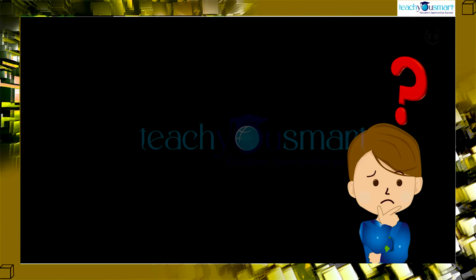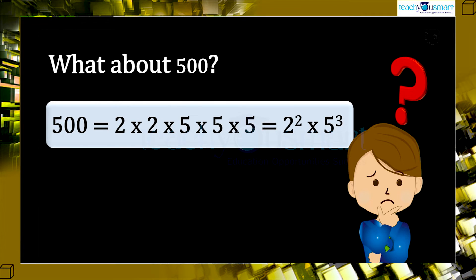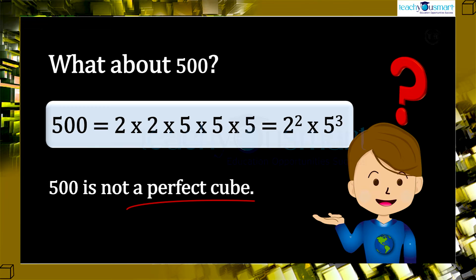Next, think about 500. The number 500 can be expressed as 500 = 2 × 2 × 5 × 5 × 5 = 2² × 5³. The prime factor 5 appears 3 times, but 2 appears only twice, so 500 is not a perfect cube. If one more 2 is included, it will be a perfect cube.